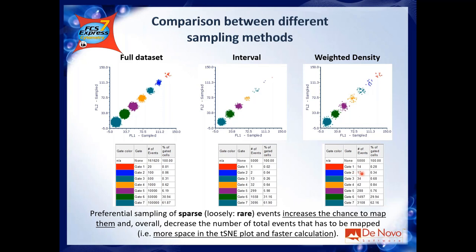The price you pay is quite small. You increase sampling of rare events at the slight expense of abundant populations — for example, gate 6 goes from 1558 events with random sampling to 1497 with weighted density, which is still more than enough to map that population. The advantage of density-based downsampling is huge: it increases the chance of sampling rare populations, or equivalently decreases the chance of missing them, and you can use fewer total events to speed up the calculation.